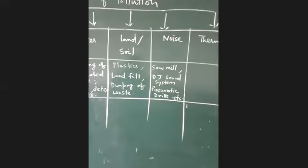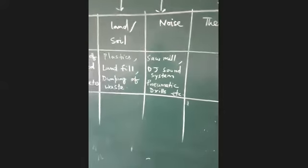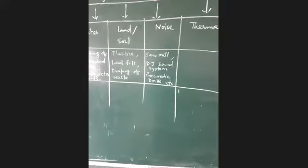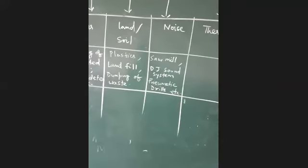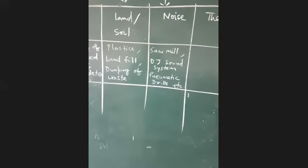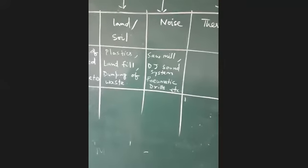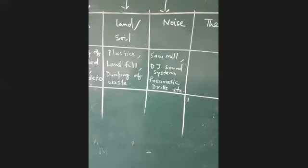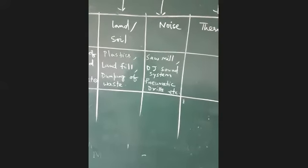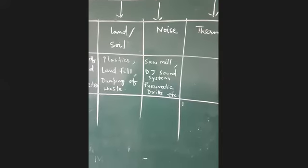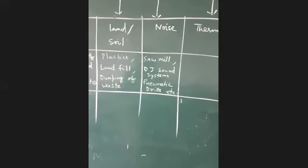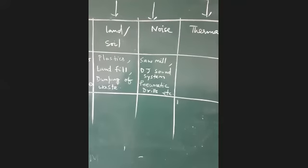Followed next is noise pollution. What are the causes of noise pollution? It may be a sawmill, DJ sound system, pneumatic drill, electric generators, mechanical saw, welding workshop or any foundry or industries also make a lot of noise. Some other causes of noise pollution is sound of jet plane or in airport also, whenever there is landing and takeoff of aeroplane it causes intense noise.